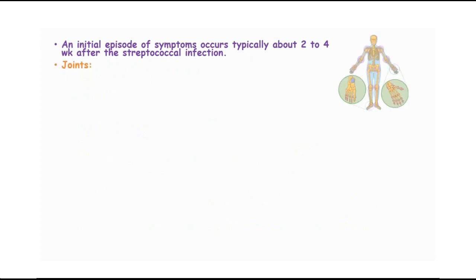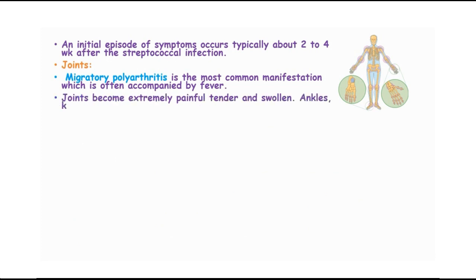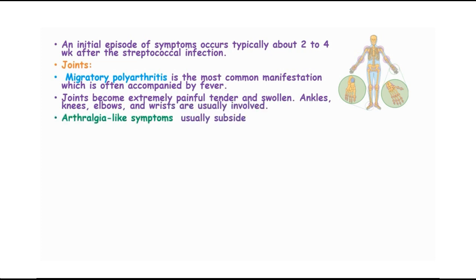An initial episode of symptoms occurs typically about 2-4 weeks after a streptococcal infection. In joints, we have migratory polyarthritis which is the most common manifestation and often accompanied by fever. Joints become extremely painful, tender and swollen; ankles, knees, elbows and wrists are usually involved. Arthralgia-like symptoms usually subside within 2 weeks.